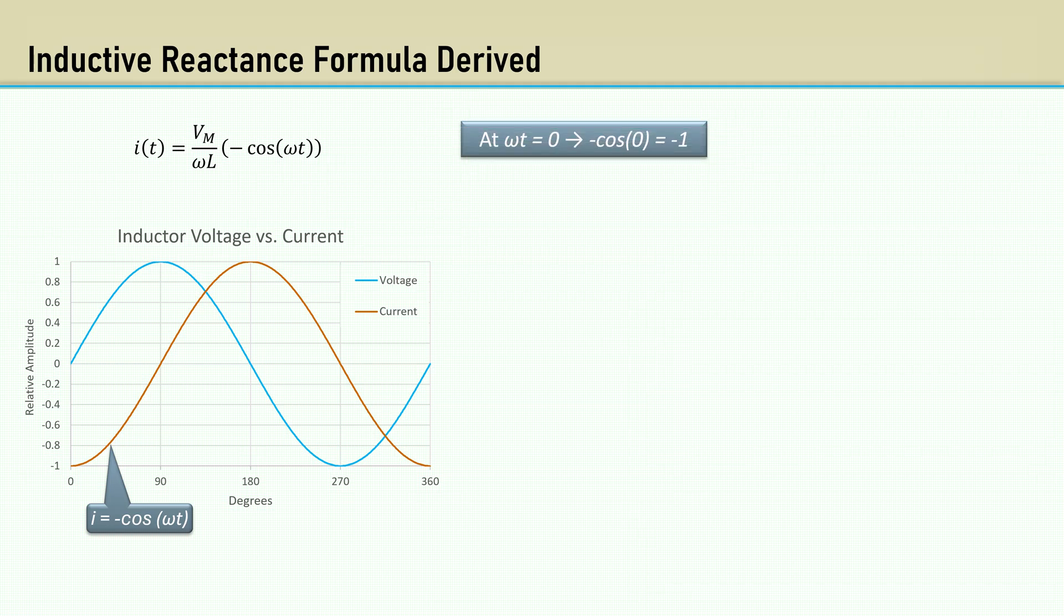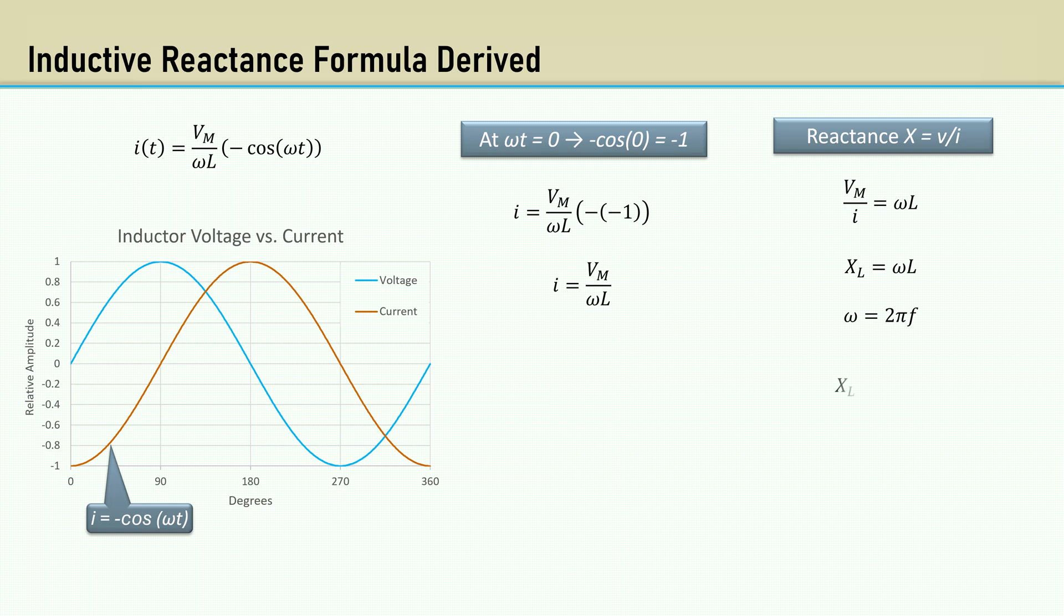When omega t is 0, the negative cosine of 0 is negative 1. Plugging in the negative 1 gives us the current as V max over omega L. Reactance X is V over I. X sub L is omega L. Putting 2π F for omega, we finally get our inductive reactance formula X sub L equals 2π F L.